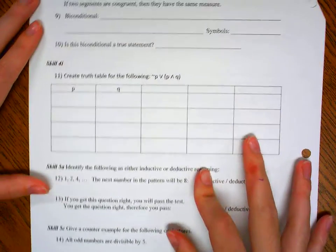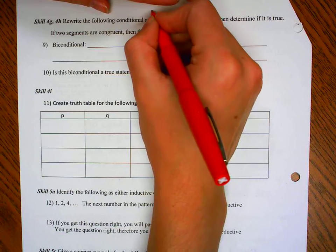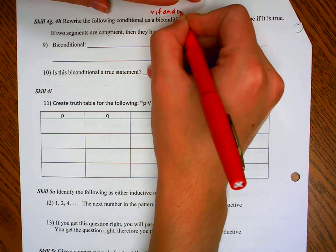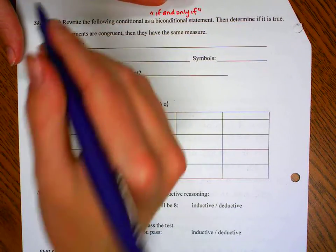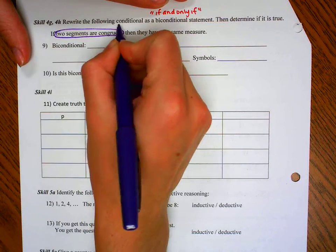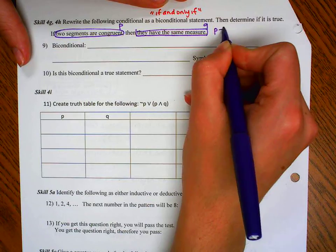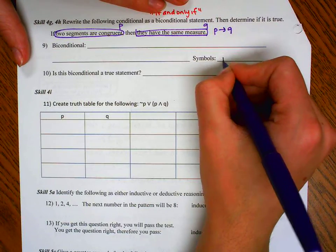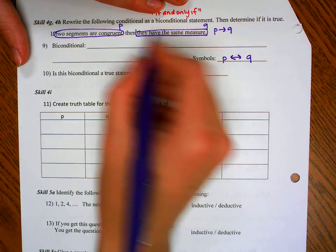Go ahead and flip. Bi-conditional. Remember, the bi-conditional tells us that we're going to use the words if and only if. Because then determine if it's true, we'll do that in a second. So it says if two segments are congruent, there's my P, then they have the same measure. So right now we have P arrow Q. For the bi-conditional, we want P going with an arrow going both directions. Q, remember that double arrow means if and only if.